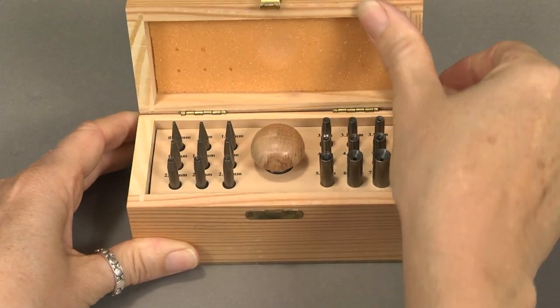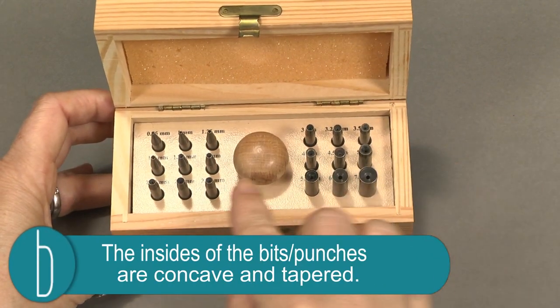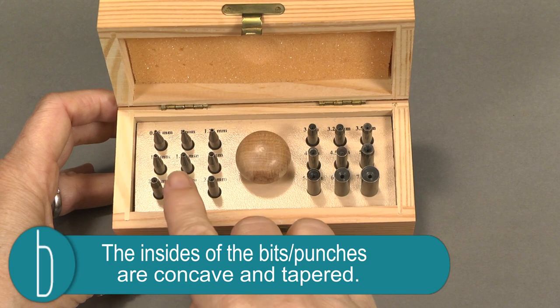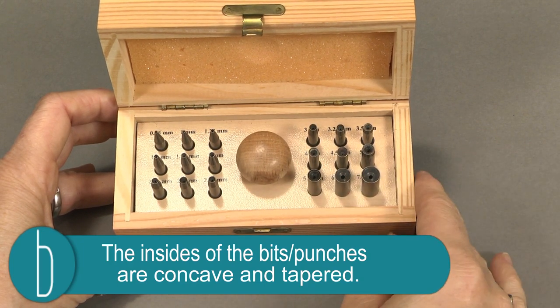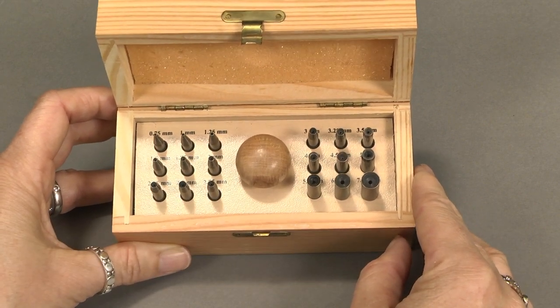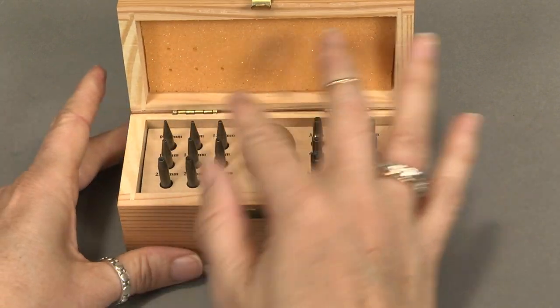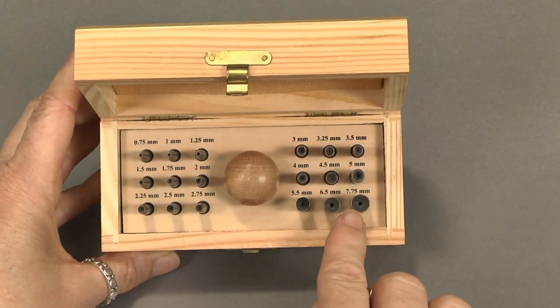So look what we have in here. These are all bits that, when pressed over a small bezel, will bring the edges of your bezel in really nicely and evenly. It's kind of a lot of awesomeness happening here. So the way these work is you pick the correct size and they go from 0.75 all the way up to 7.75.